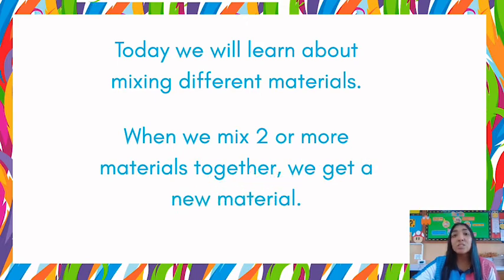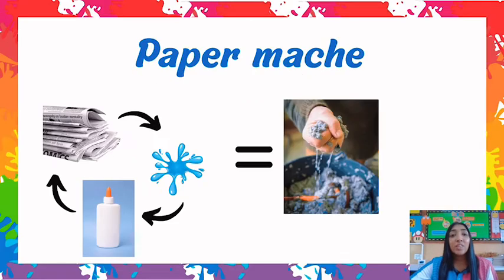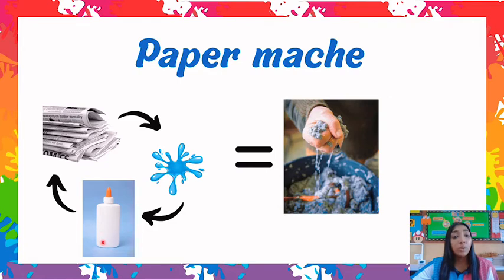When we mix two or more materials together we get a new material. Let us look at a few examples of mixing materials. The first example of mixing materials is paper mache. If you mix paper with water and glue you can get paper mache.